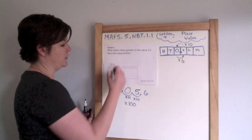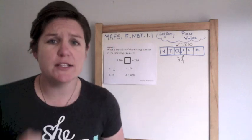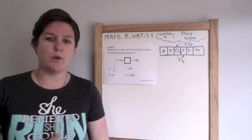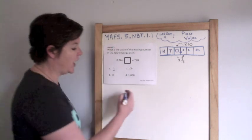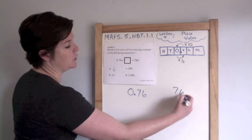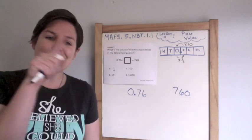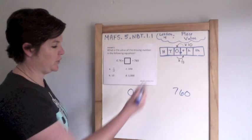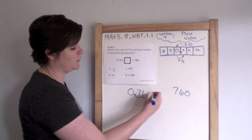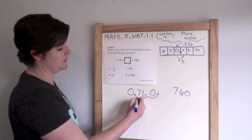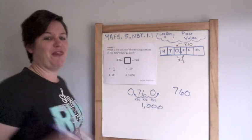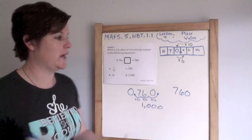Example three: what is the value of the missing number in the following equation? We have 0.76 and we need to get it to 760. Moving the decimal point: 0.76 becomes 7.6, then 76, then 760 — that's three moves to the right, so times ten, times ten, times ten. Ten times ten times ten is one thousand, so the missing number is one thousand.